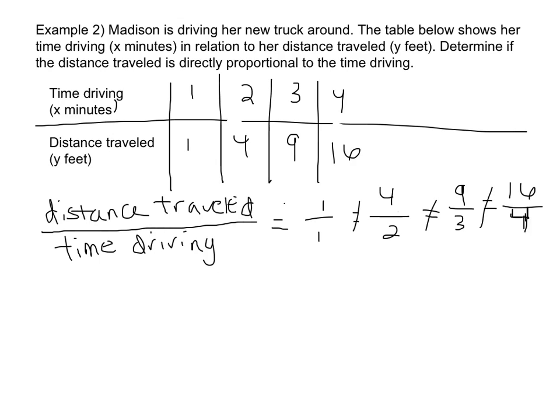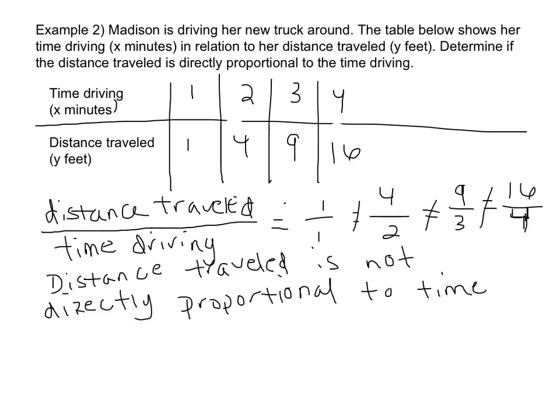As soon as you can tell that one of your ratios is not equal, you know that you do not have a directly proportional relationship, even if the rest of them are equal. Here, what we're just going to say is this relationship is not directly proportional. Because the distance traveled is not directly proportional to the time driving, we can't discuss constant of proportionality.